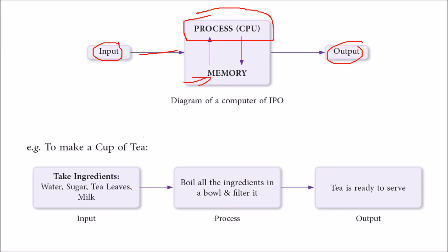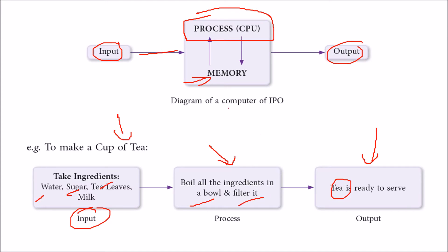To make a cup of tea — as an analogy — you need certain ingredients like water, sugar, tea leaves, and milk. These are all the inputs you would require. And what you get in response is the output: when you are trying to make a cup of tea, you will get tea as the output. The process involves boiling all the ingredients together in a bowl and then filtering and straining it.